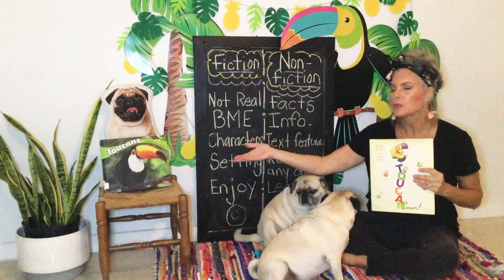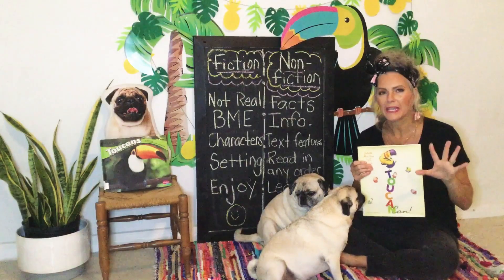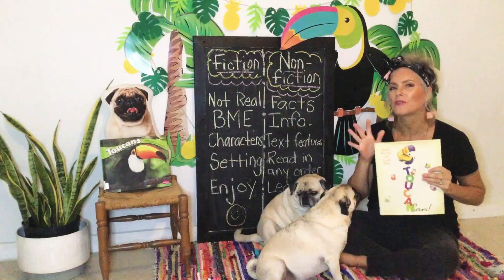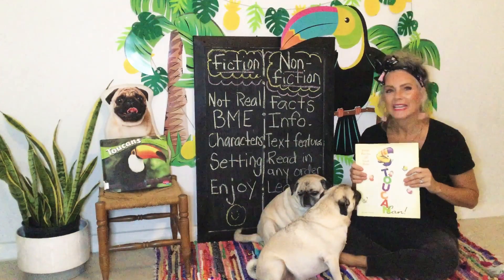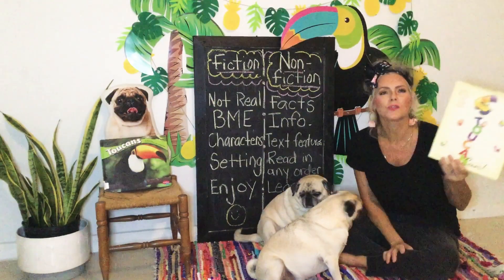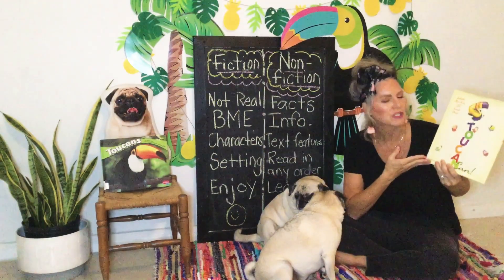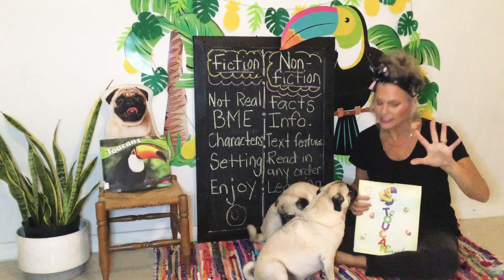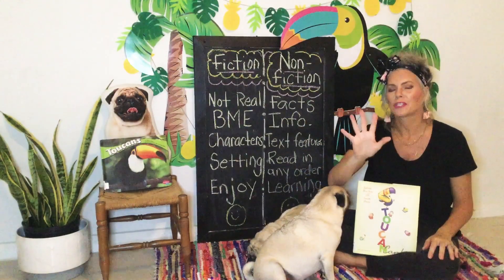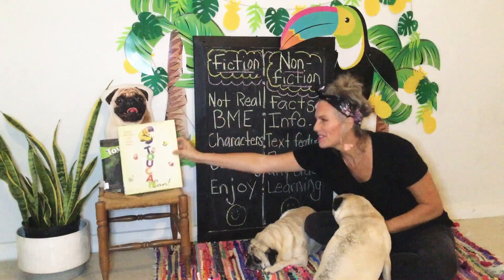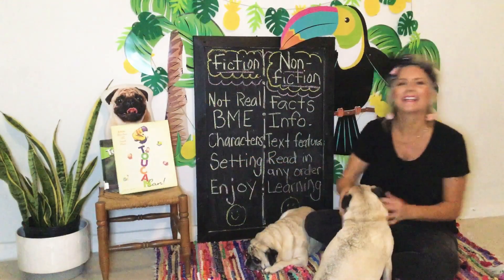Think about what we learned yesterday about real toucans. What were five things that a real toucan can do? And then on the other side, write five things that a toucan cannot do — a real one. Think about what things you heard in the story that this fictional toucan was doing that toucans really can't do. Five things a real toucan can do, five things a real toucan cannot do. I hope you guys enjoyed the story. We'll see you next time. Have a great day, guys. Bye!